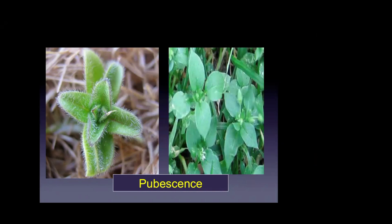Common chickweed typically has soft hairs on the margin of the leaf, versus sticky chickweed which is generally covered with hairs on the leaves and stems. Another example using hairs to identify grassy weeds is crabgrass: smooth crabgrass is hairless, large crabgrass is covered with hairs all over stems and leaves, and southern crabgrass has hairy stems and stolons but smooth leaves. Hairs on a plant can help you identify the weed species.